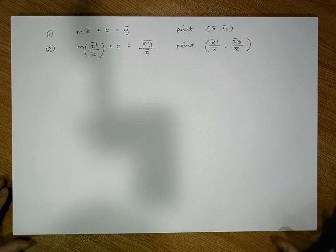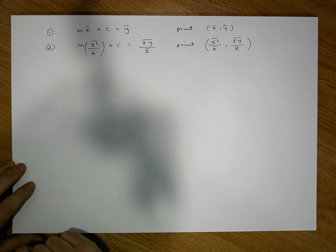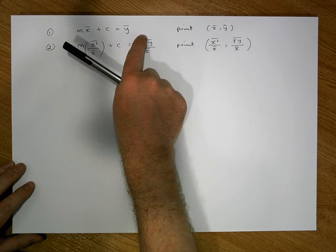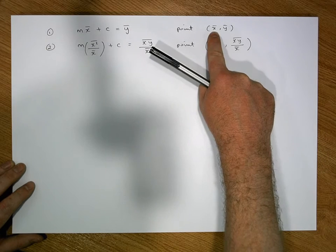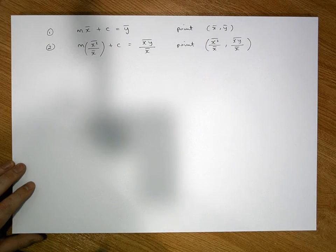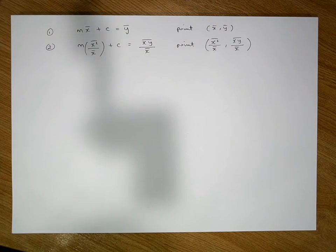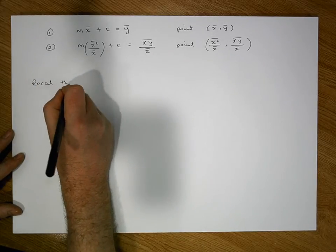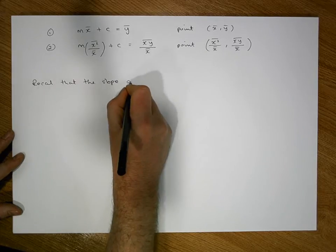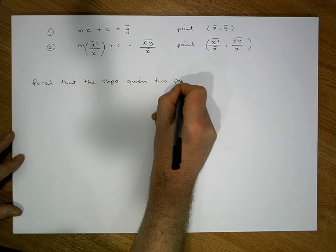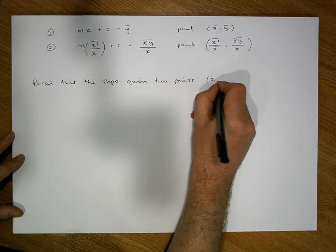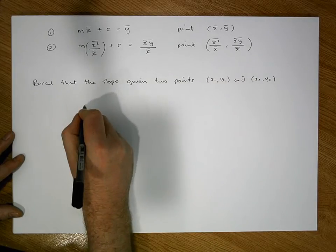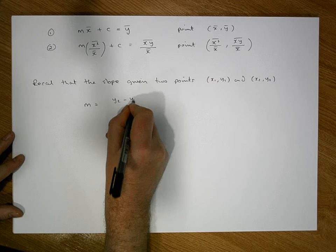What's interesting is that after going through the partial derivatives and minimizing, the best-fit regression line passes through the point (x̄, ȳ) — the average of the independent variable and the average of y. Now that we have two points on the line, we can calculate the slope. Recall that the slope given two points (x₁,y₁) and (x₂,y₂) is m = (y₂ - y₁)/(x₂ - x₁).